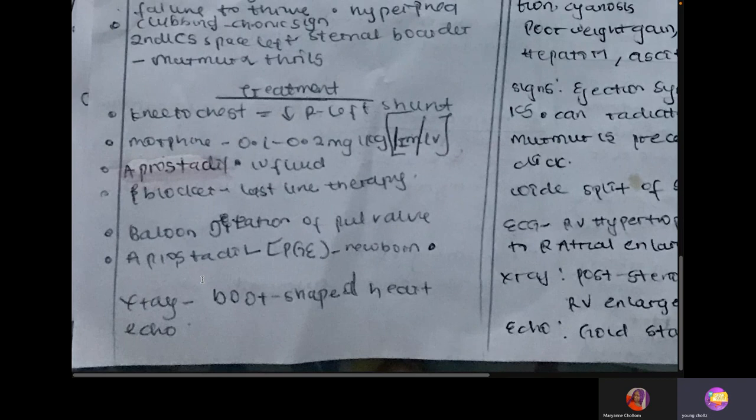Treatment of tetralogy of Fallot: knee-to-chest to decrease right-to-left shunting. Keep the ductus arteriosus open with prostaglandin infusion — drug of choice is alprostadil. Morphine and beta-blockers can also be given. Most importantly, the pulmonary stenosis must be surgically relieved. X-ray sign: boot-shaped heart.